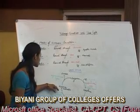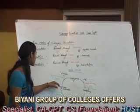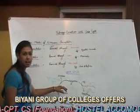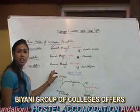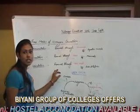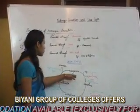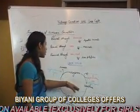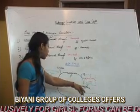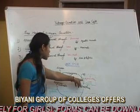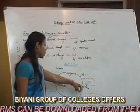This Arginosuccinate undergoes a cleavage process and forms Fumarate and Arginine. The Fumarate is moved to the TCA Cycle intermediate pool, and the Arginine is further cleaved to Urea and Ornithine. This Urea finally moves to the Kidney and is excreted.